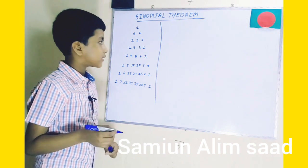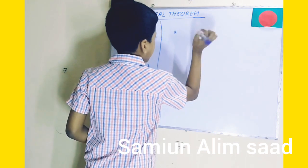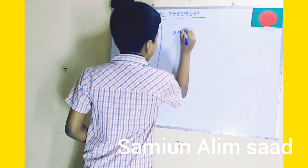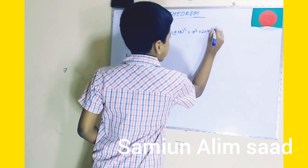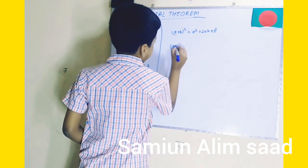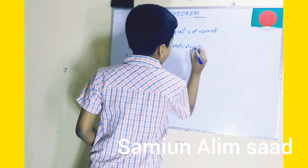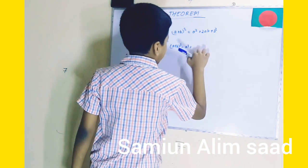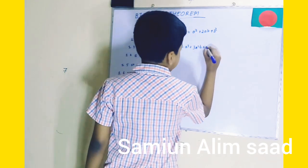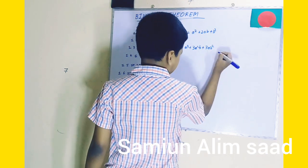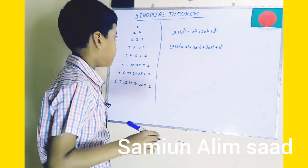First, let me list the formulas. a plus b to the whole square, which is equal to a squared plus 2ab plus b squared. And a plus b cube, which is equal to a cubed plus 3a squared b plus 3ab squared plus b cubed. So here are the formulas.